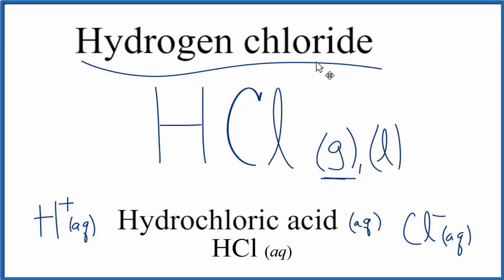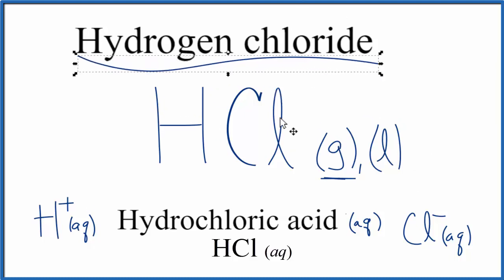This is Dr. B with the formula for hydrogen chloride: HCl as a gas or maybe a liquid, and hydrochloric acid, which will be an aqueous solution. Thanks for watching.